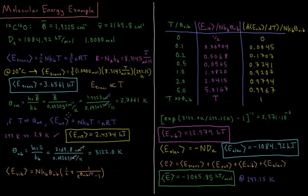For a linear molecule, or a diatomic molecule in this case, the rotational energy is NKT, or NRT. Substituting in the values as before, we get 2.4374 kilojoules per mole.